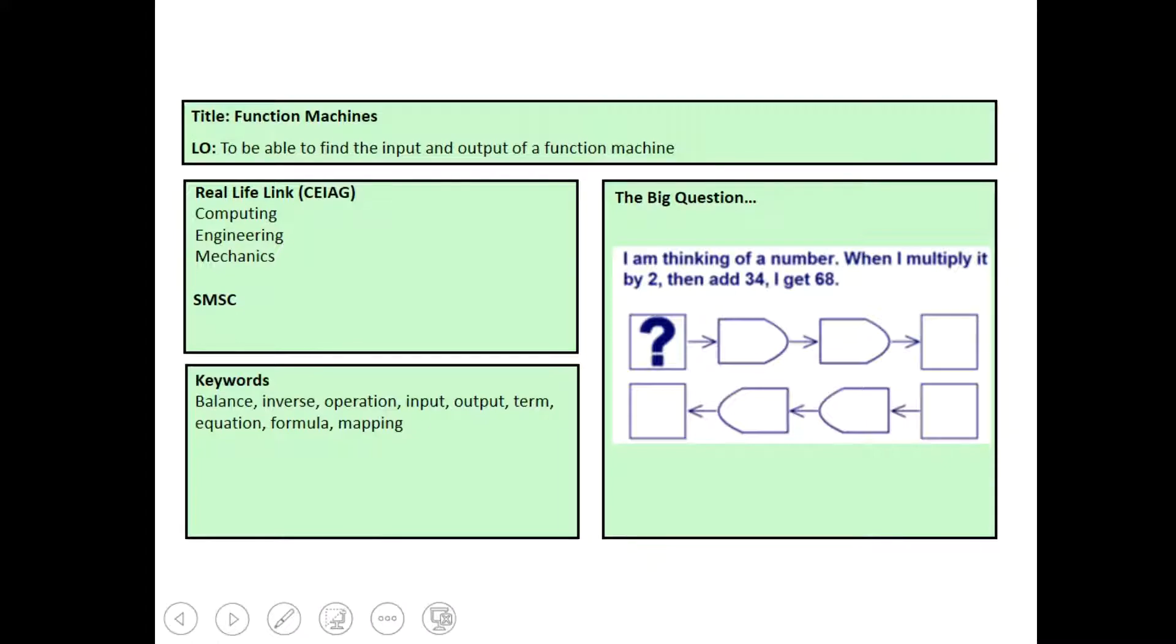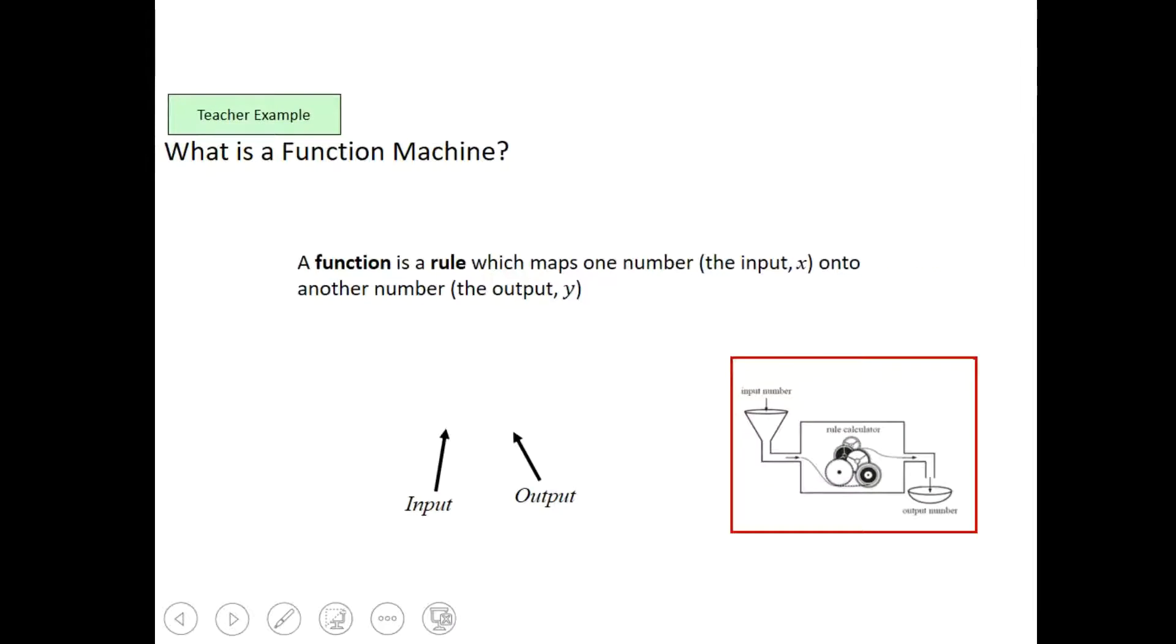Now when it comes to function machines, effectively what we're talking about is something going in, a function or an operation happening to it, and then you get an output. So what goes in is called the input and what comes out is called the output.